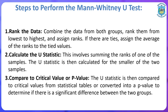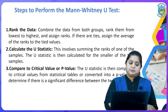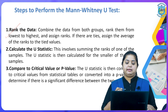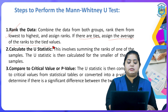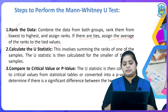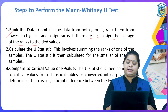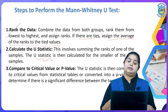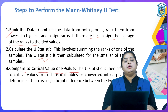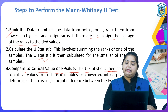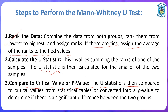There are three steps to solve the Mann-Whitney U-test. The first step is to rank the data: combine the data from both groups, rank them from lowest to highest, and assign ranks. If there are ties, assign the average of the ranks to the tied values. The second step is to calculate the U-statistic using its formula. The third and most important step is to draw an interpretation based on the critical value or p-value — compare your computed U-value with the critical value. If the calculated U-value is greater than the critical value, the null hypothesis will be rejected.